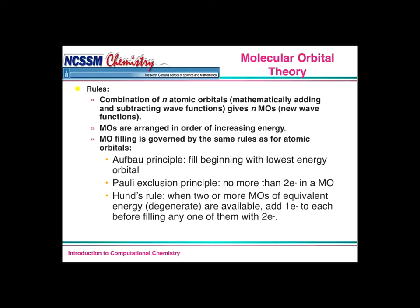In molecular orbital theory there are some rules. The combination of some number of atomic orbitals gives you the same number of molecular orbitals — so two atomic orbitals give us two MOs. The molecular orbitals are arranged in order of increasing energy, just like the SPD filling you've probably seen. We follow the Aufbau principle, filling the molecular orbital beginning at the lowest energy. The Pauli exclusion principle says no more than two electrons in a molecular orbital, and Hund's rule says when two or more MOs are of equivalent energy, we add one electron to each before filling any of them with two electrons.